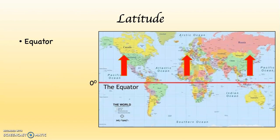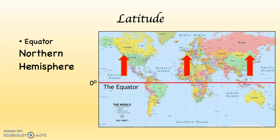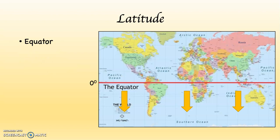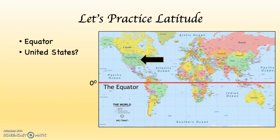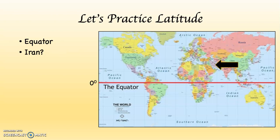Everything north of the equator is in the northern hemisphere — 'hemisphere' means half of a sphere, so this is the northern half of the Earth. Everything south of the equator is in the southern hemisphere. Let's practice: the United States is in the northern hemisphere; Argentina is in the southern; Iran is in the northern; and Botswana is in the southern hemisphere.